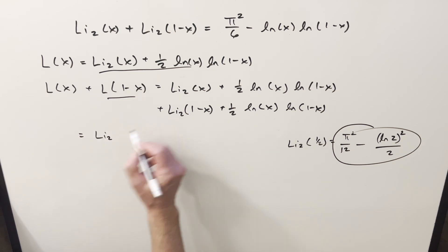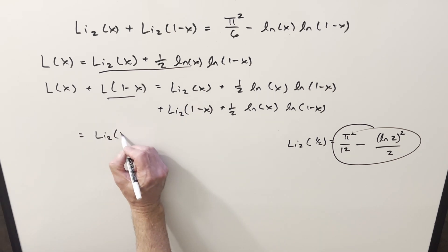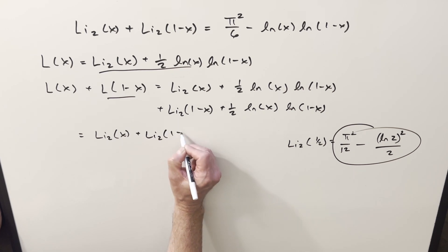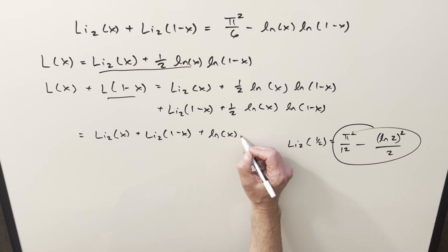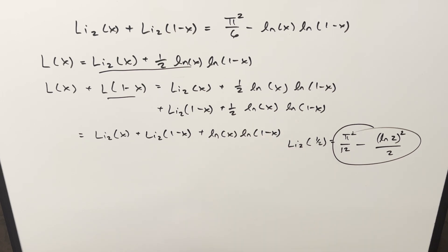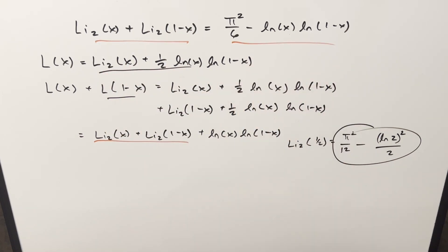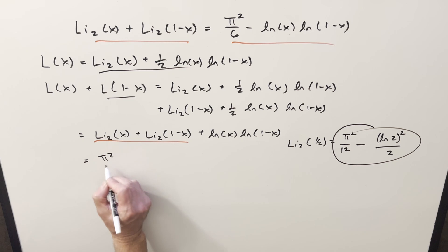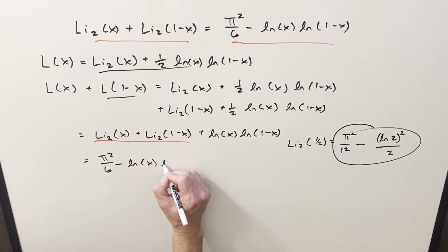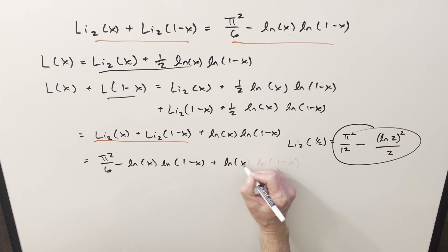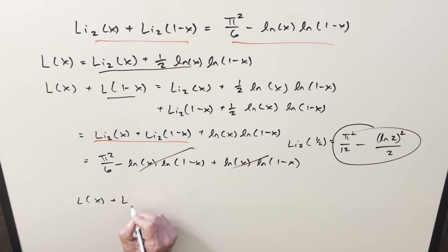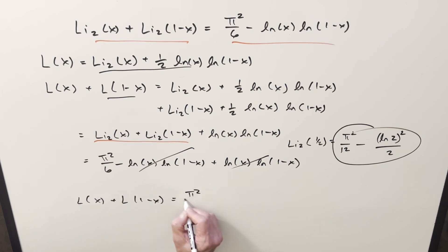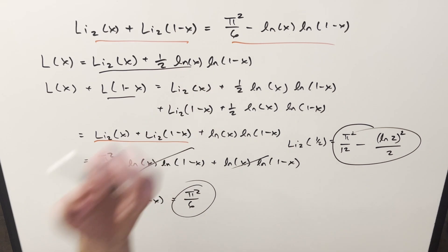Putting this together and adding, we have Li₂(x) + Li₂(1 − x). When you put the two copies of the half-ln terms together, the coefficient becomes 1, so we just have ln(x) · ln(1 − x). For this combination we can use the reflection formula we just found. Plugging in, this becomes π²/6 minus ln(x)·ln(1−x) plus the same term, and these cancel. So L(x) + L(1 − x) = π²/6.